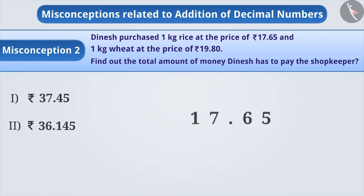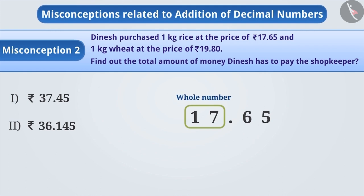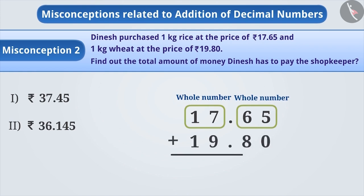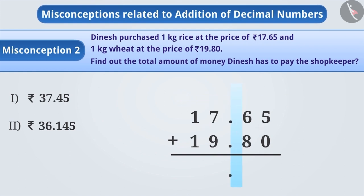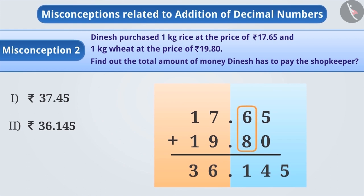While dealing with decimal numbers, sometimes it is misunderstood that the digits to the left side of the decimal point make one whole number and the digits to the right side make another whole number. When we add these two decimal numbers, we write the sum of the digits on the right and left in their respective places. Here, the sum of 6 and 8, which is 14, is written as it is. The carried over number is not added with digits in the ones place.